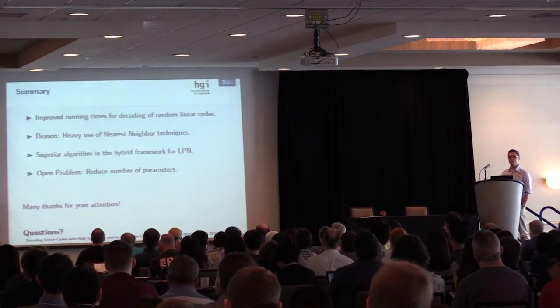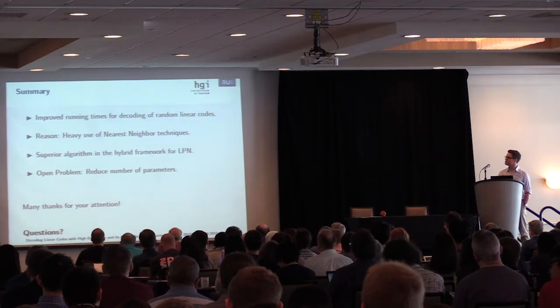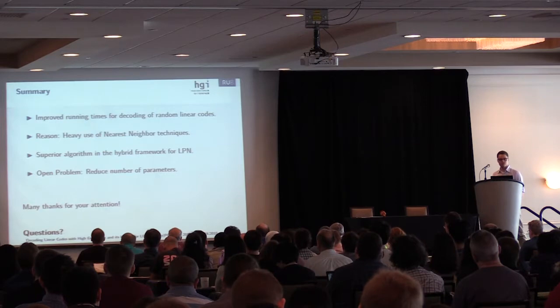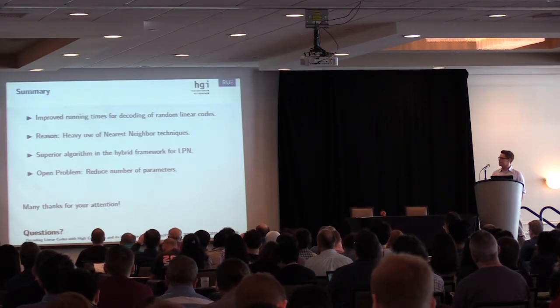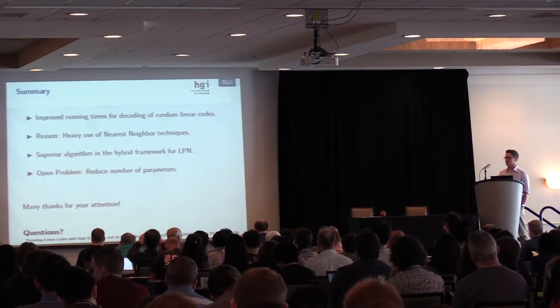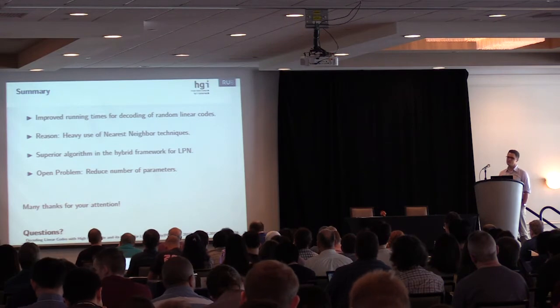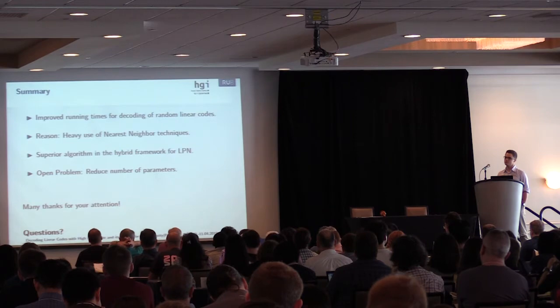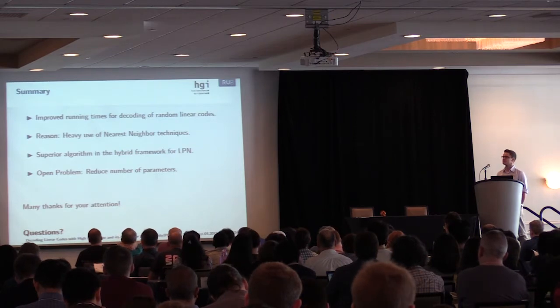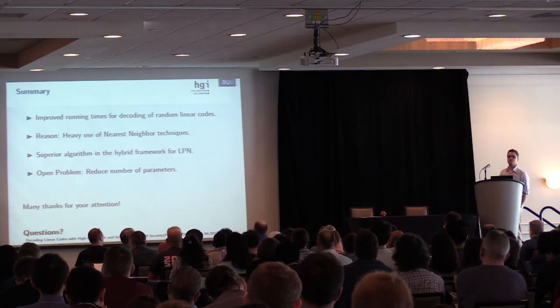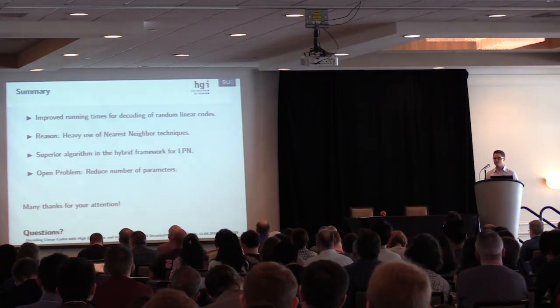To sum up, our algorithm provides improved running times for the decoding of random linear codes. The reason for this is the heavy use of nearest neighbor techniques. This also provides a superior algorithm in the hybrid framework for LPN. As I said before, an open problem is the complexity of our algorithm and the huge number of parameters which needs to be reduced in order to optimize the algorithm further. Thanks for your attention. Feel free to ask questions.